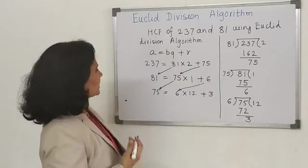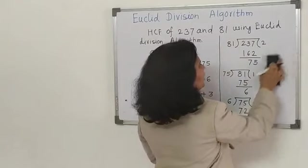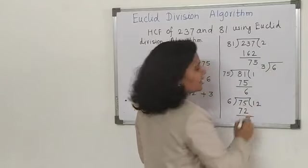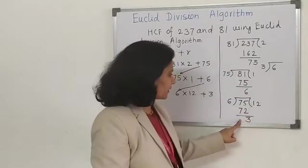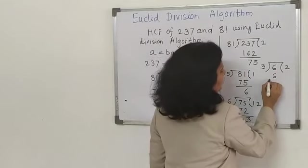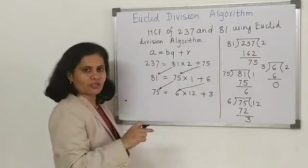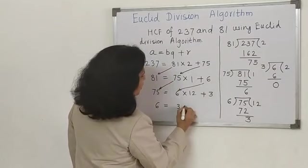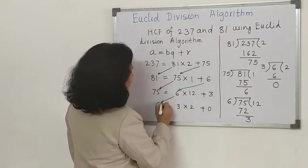We will divide 6 by 3. Whatever the divisor is, that will become the dividend and remainder will become the divisor. 3 times 2 is 6, so the remainder we got is 0. The dividend is 6, divisor is 3, quotient is 2, and remainder is 0.